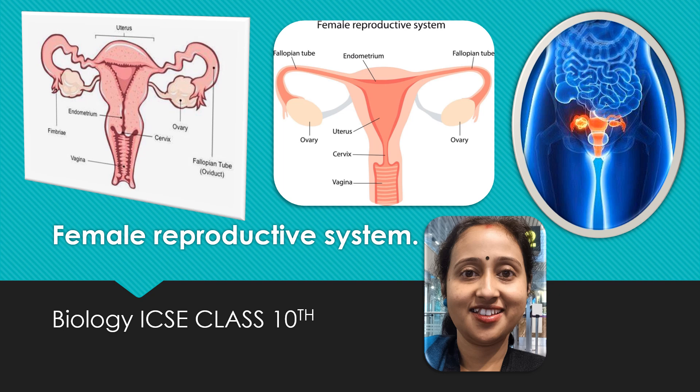Here I have discussed in detail the structure and function of female reproductive system with the labeled diagram. Please go to the description box where I have shared the link, discussing in detail the female reproductive system with the labeled diagram and the structure and the function.